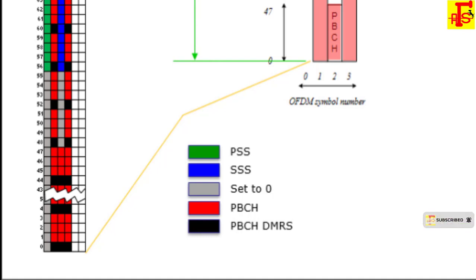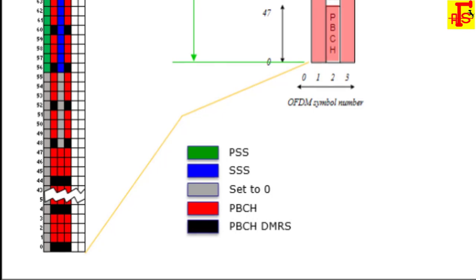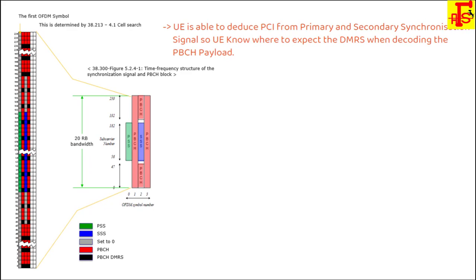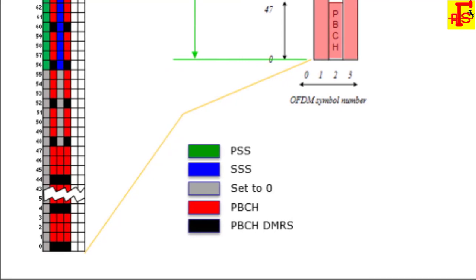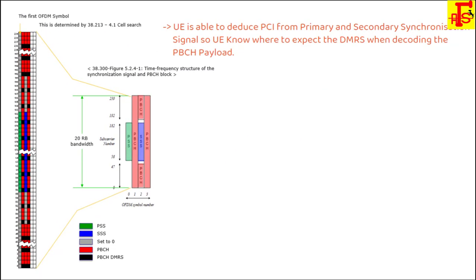PBCH DMRS is a special type of physical layer signal which functions as a reference signal for PBCH decoding. In LTE we used CRS cell specific reference signal for PBCH decoding, but in 5G we don't use CRS. We use PBCH DMRS to decode the PBCH.